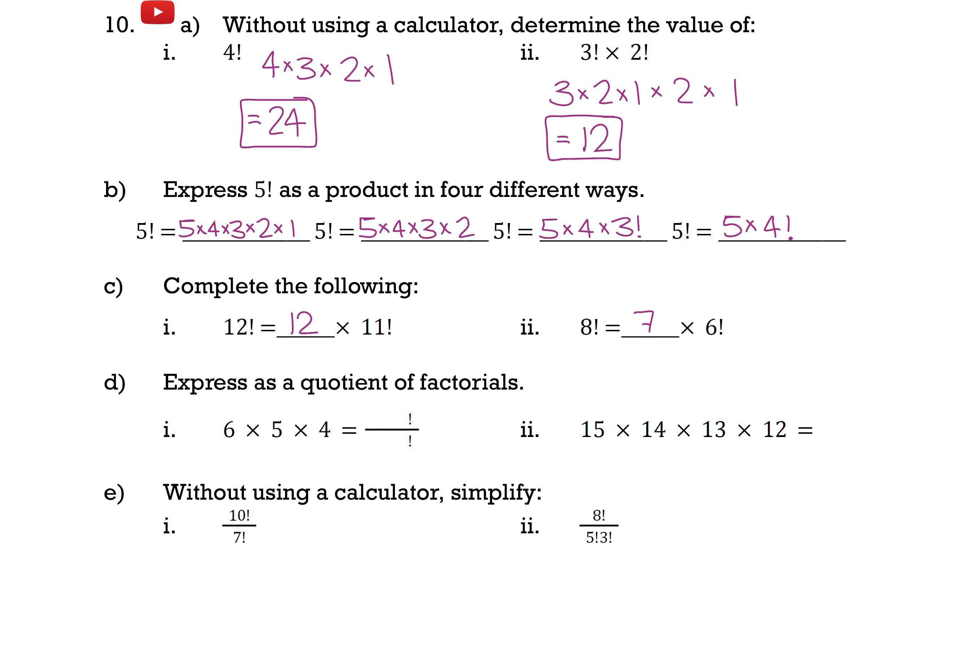Part d now is asking us to express the following as a quotient of factorials. So in other words, a division. So here I have 6 times 5 times 4. Now if this were 6 factorial, it would be 6 times 5 times 4 times 3 times 2 times 1. But I don't see that times 3 times 2 times 1, which means it's been divided out.